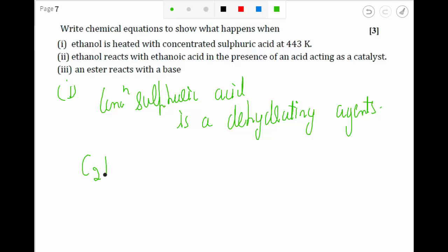Ethanol is C2H5OH. When it is heated in the presence of concentrated sulfuric acid, which is a dehydrating agent, it will take OH and one H from here, and water will get separated out.